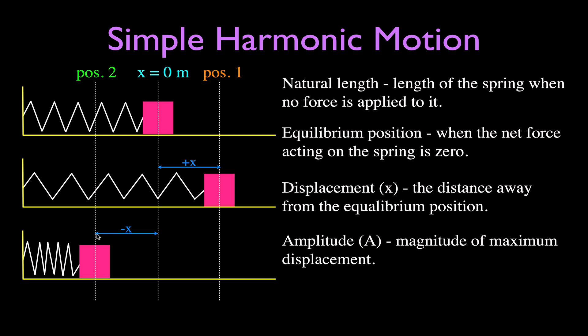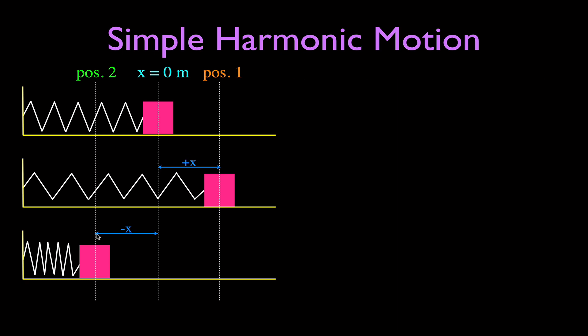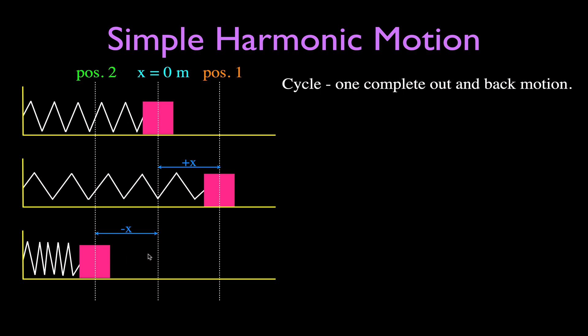Please be aware of those terms when describing simple harmonic motion. A cycle is when the object undergoing simple harmonic motion completes one out-and-back motion. You can measure it from various positions — it must complete one full back-and-forth motion returning to the same location.